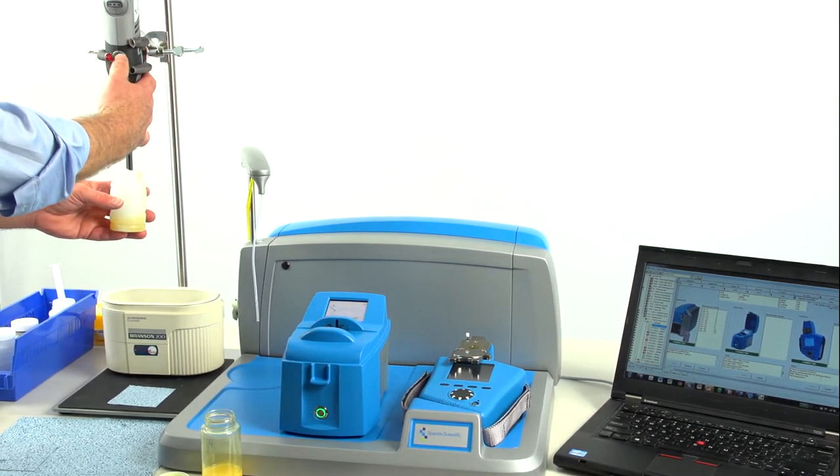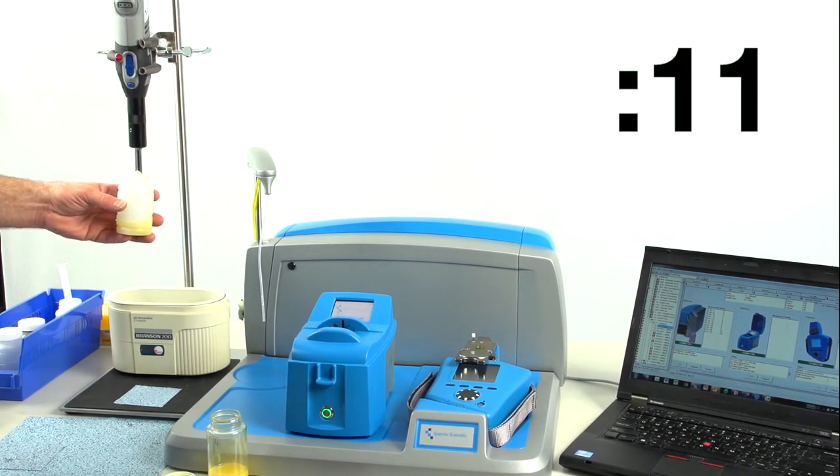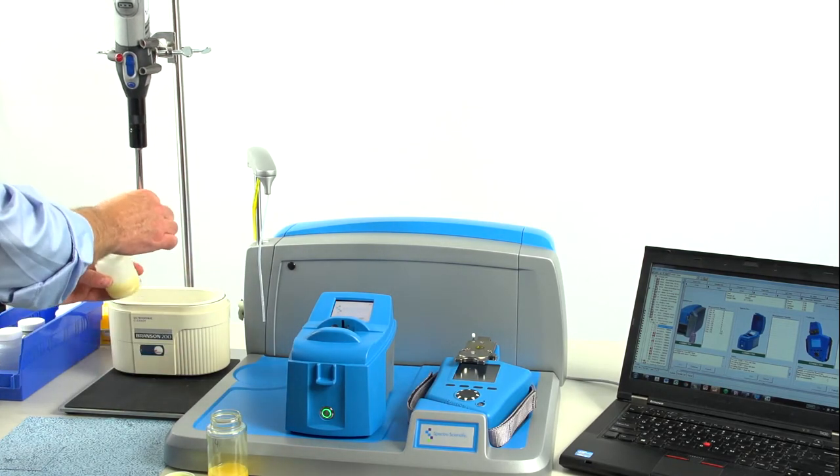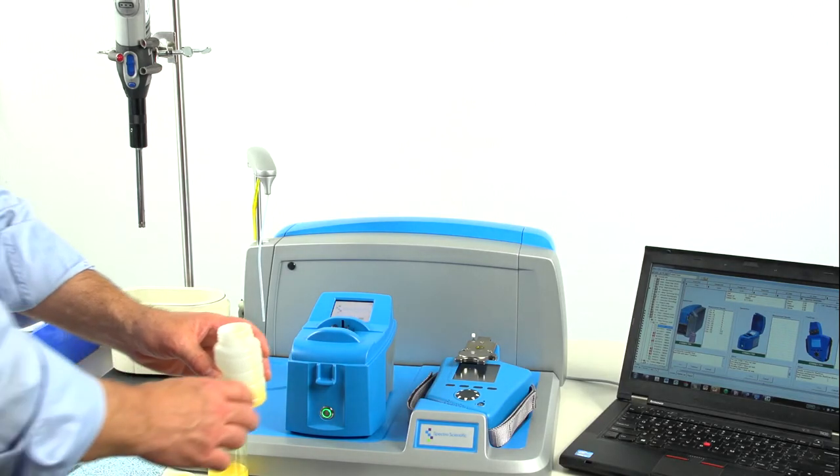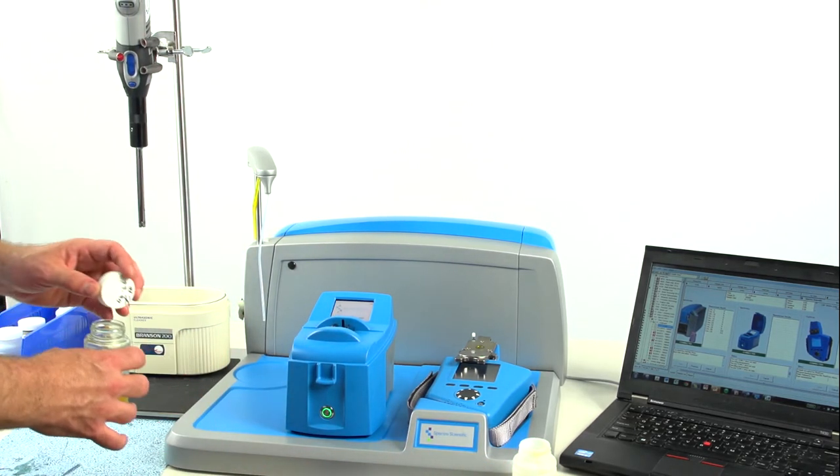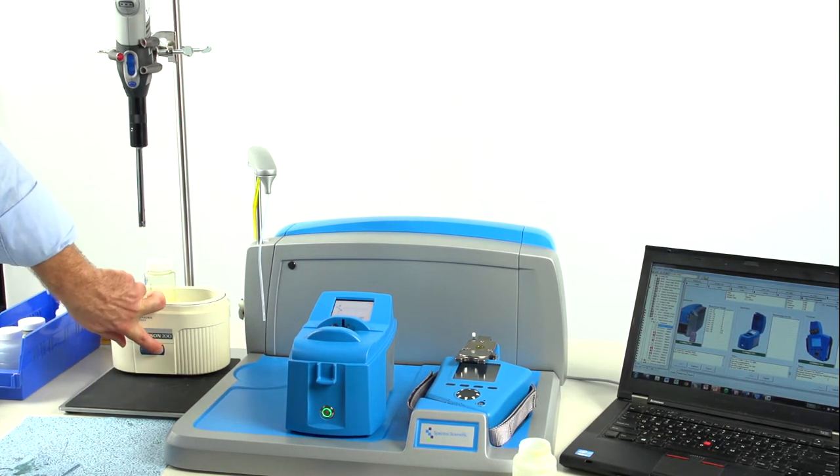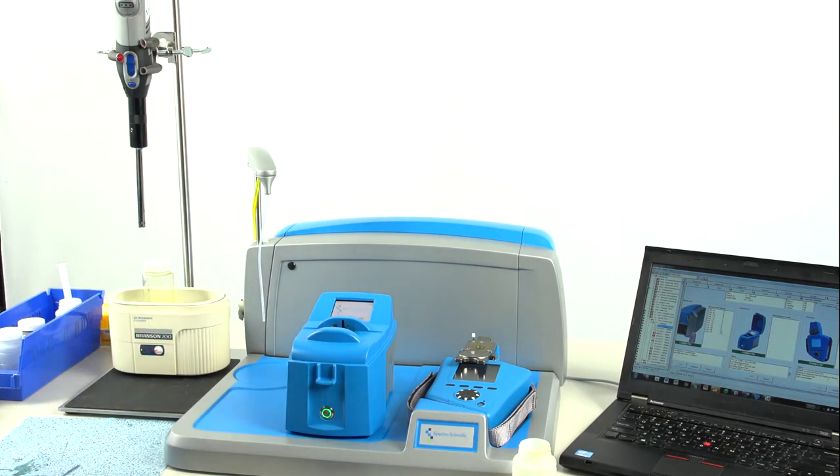The patent-pending technique homogenizes the sample. We let that sample sit for a minute before running it in the FluidScan. In the meantime we can take the rest of our oil sample, put it in an ultrasound for 30 seconds. That removes any air bubbles introduced during the shaking process.